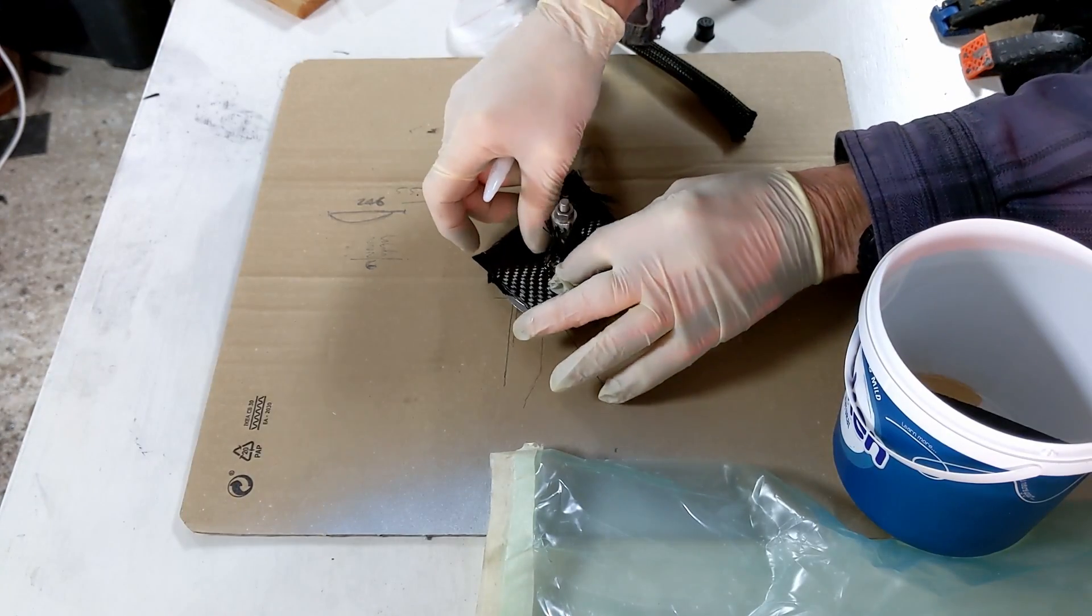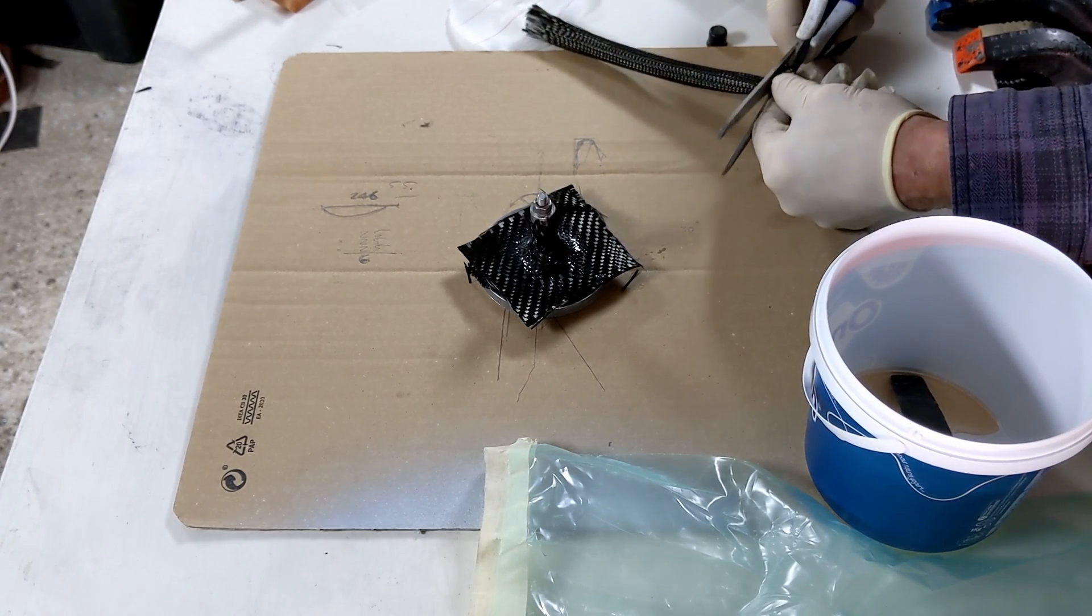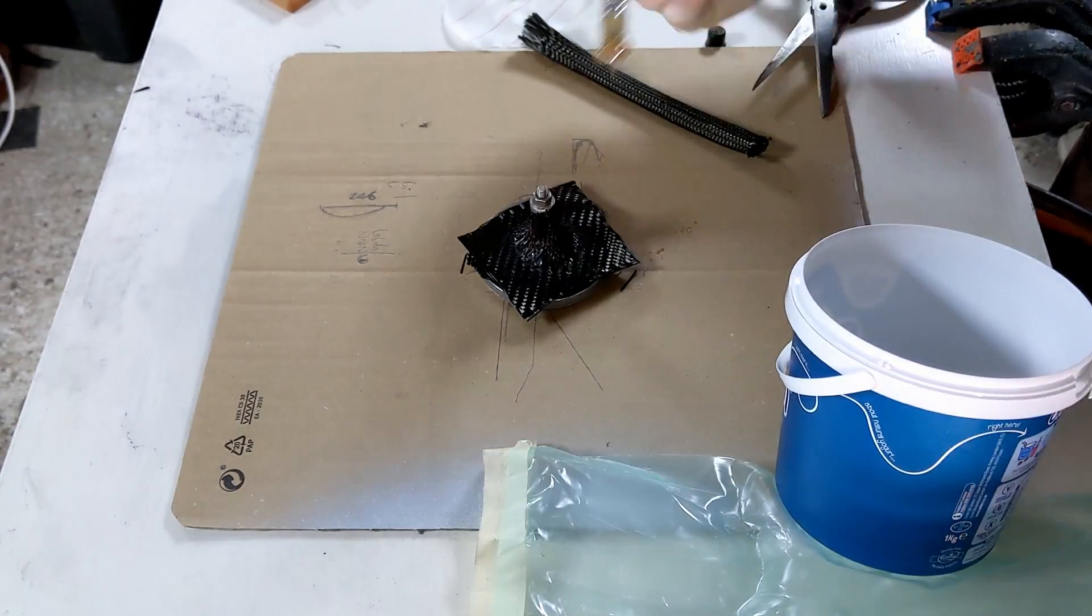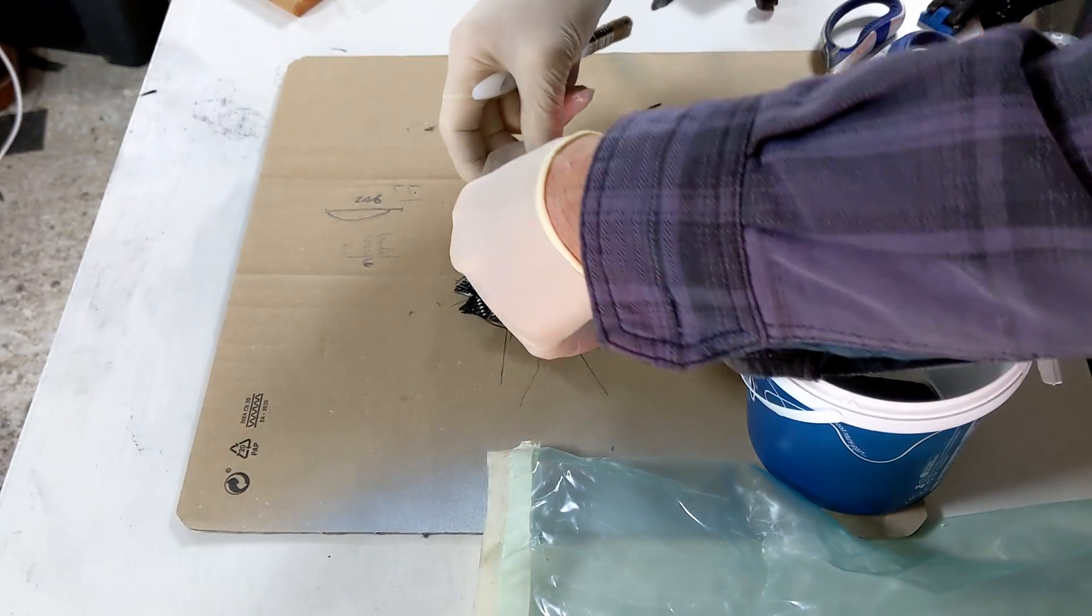This is a bit of carbon now. Cut ourselves another bit of tube. Get some more resin on there. And we don't know how it's going to turn out. So I'm just going to put that on. A bit of peel ply.